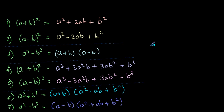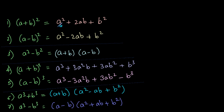The best way to remember such types of formulas is to group similar types of formulas and then remember them. I've basically grouped these formulas. So the first one is (a + b) whole square, which gives us a square plus 2ab plus b square.